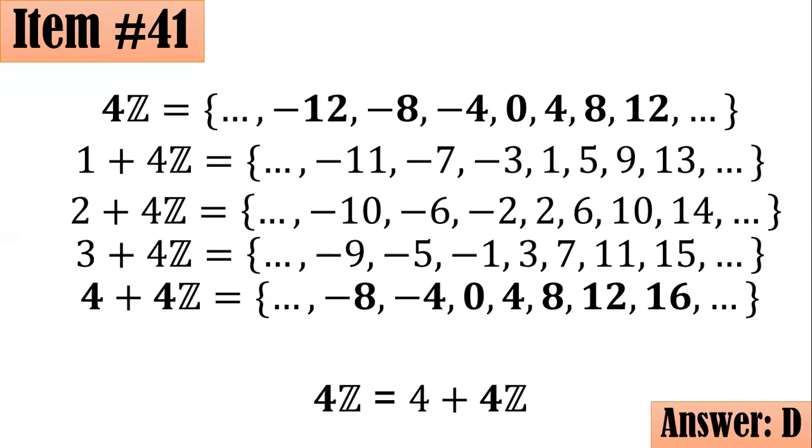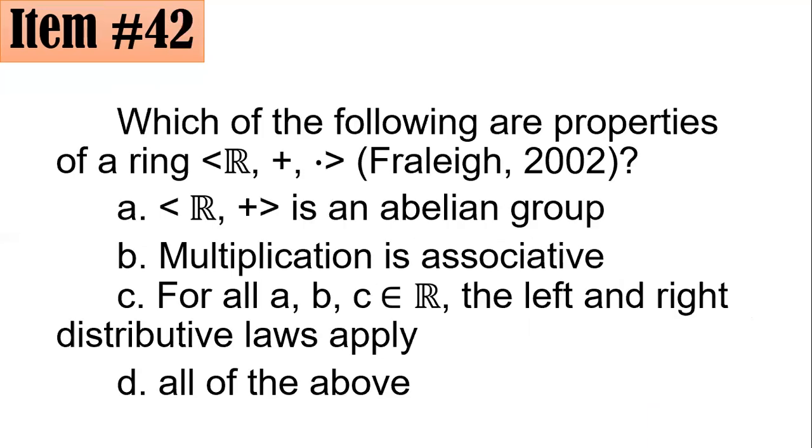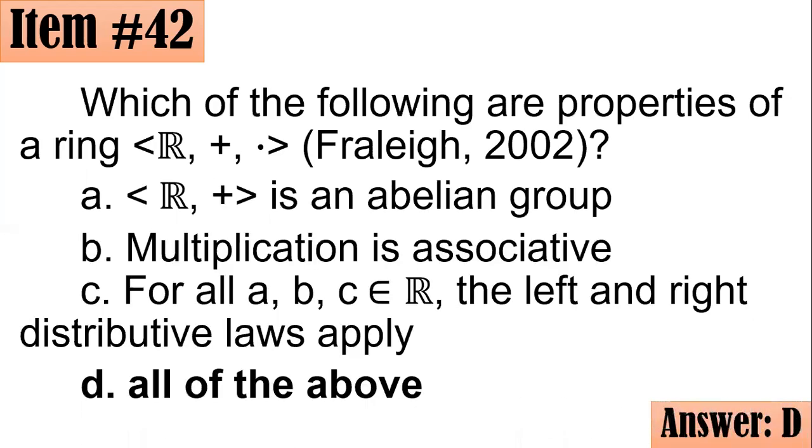Item 42. Which of the following are properties of a ring? We have here real numbers with addition as a first operation and multiplication as a second operation. According to Fraleigh 2002, is R plus abelian? Should the multiplication be associative? For all A, B, and C elements of R, the left and right distributive laws apply, or all of the above? According to Fraleigh, all of these properties have to be satisfied. In fact, this is your ring. Letter D.